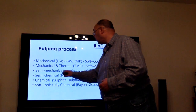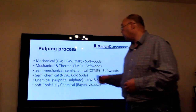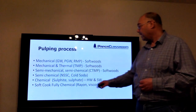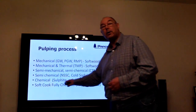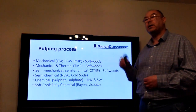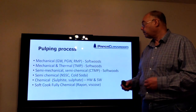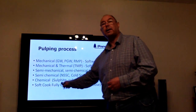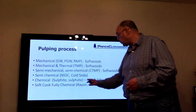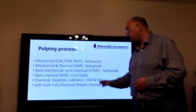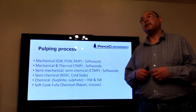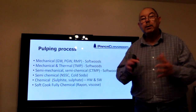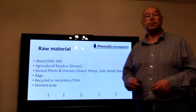Semi-chemical on its own is a form of hybrid pulping. It may be a pure chemical pulping process, as seen in other videos, or it could be what we call a soft cook — fully chemical — essentially producing rayon and viscose, where you dissolve a whole tree and then reprecipitate some of the cellulose.